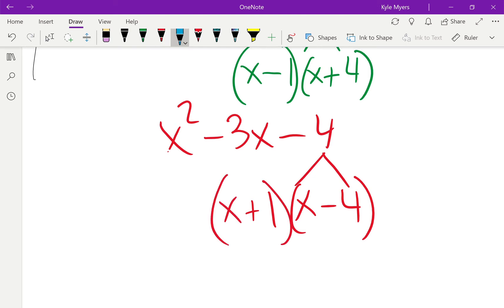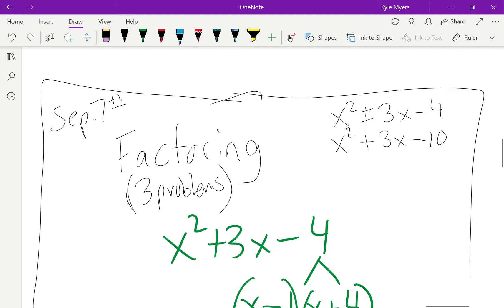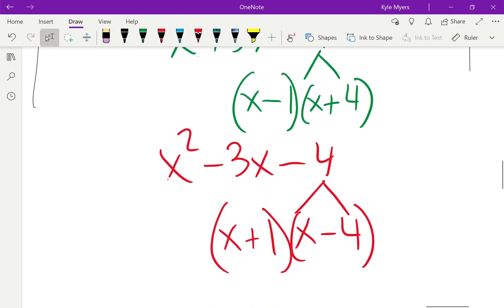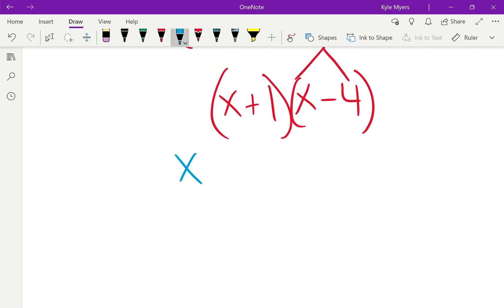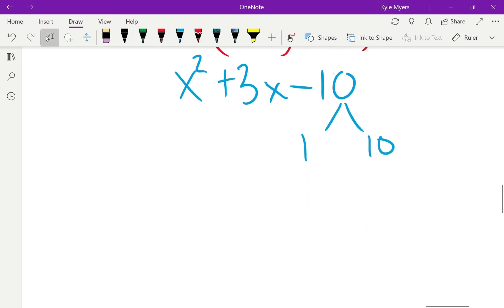And then for our last problem we have x squared plus 3x minus 10. So check it out, I'm going to multiply 10. I get 1 and 10. Well that's not going to work if I subtract or add, but I'm going to have to subtract because that's negative 10.